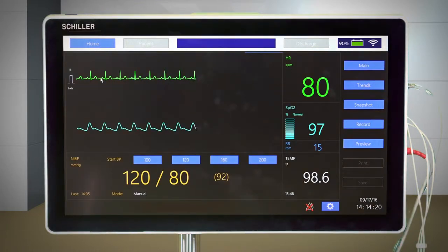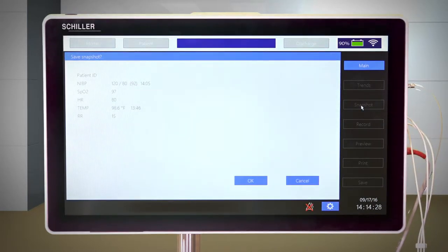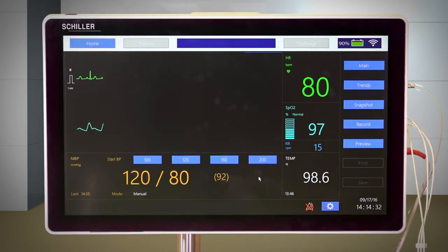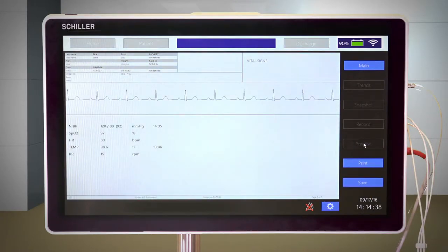The Vital Sign screen displays all current parameter values. By pressing Snapshot, you can save a snapshot of all current parameters at any given time and review them later, or press Preview and generate a report that will include the patient information, an ECG strip, and parameter values that can be saved and accessed in the future.